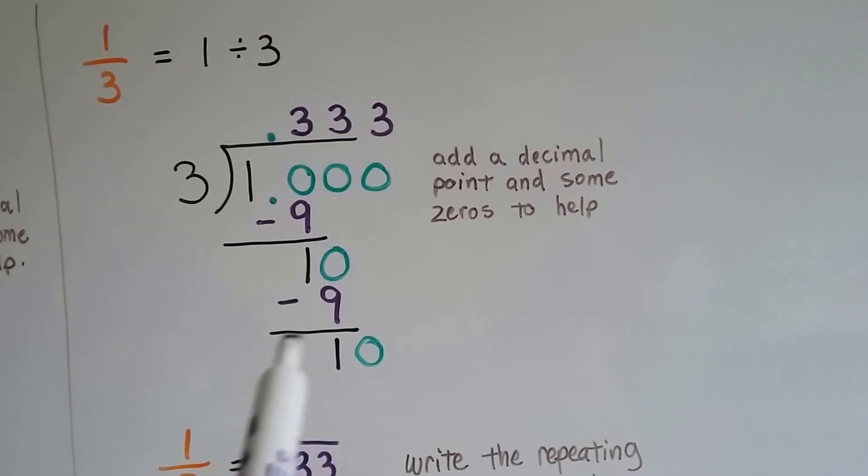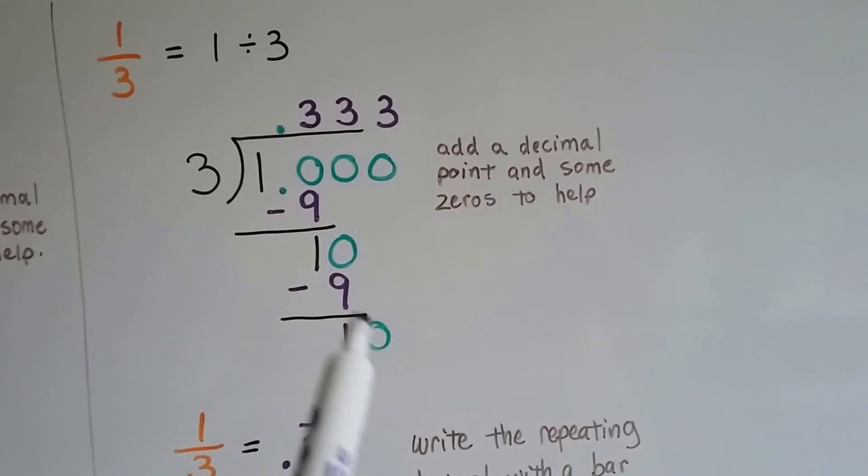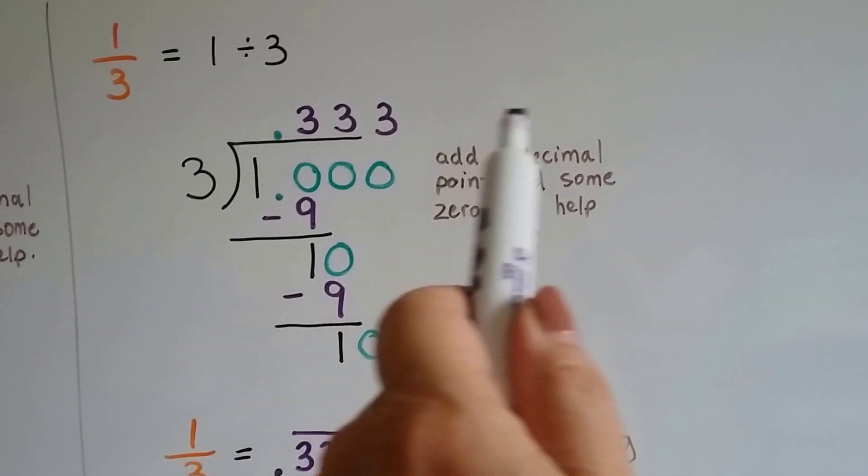We get 9 again, and we have to subtract and get a 1. We drop this one down, and it's just going to keep being a 3. We're going to keep getting a 9 and a 1 and a 9 and a 1. So that's going to keep being a 3.